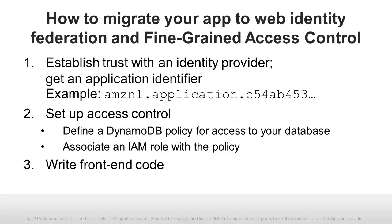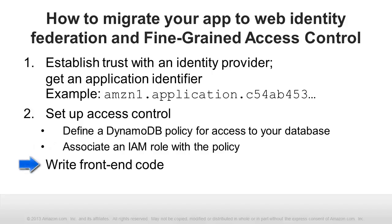Here are the steps for employing Web Identity Federation and fine-grained access control in an application. First, if you have not already done so, register your application with an identity provider — the provider will give you a unique application identifier string. Next, define an access policy for your users: determine what API actions applications should perform on their behalf and on what database items. Then use the DynamoDB policy wizard to create a policy string that encapsulates that policy, incorporating your application identifier string. Now use the IAM console to create a role that utilizes this policy. Finally, incorporate code into your application that uses temporary security credentials from STS to make signed calls to the DynamoDB API.